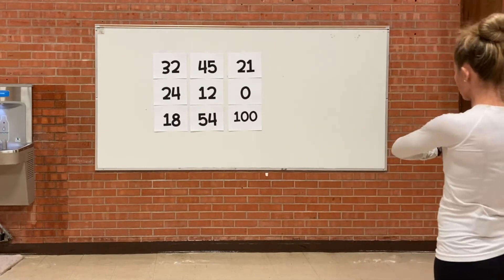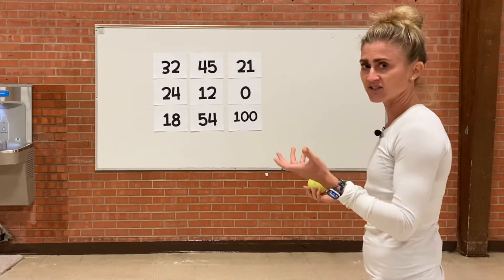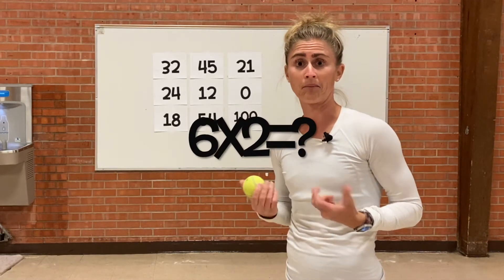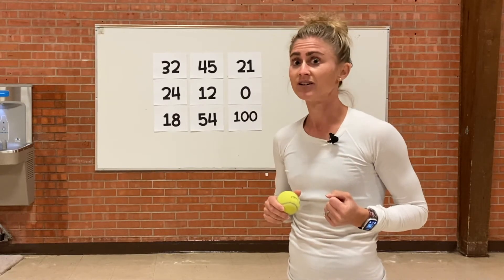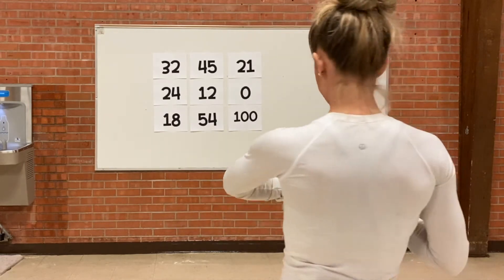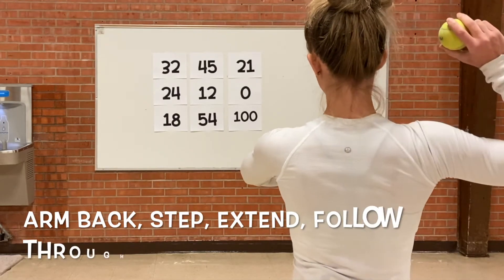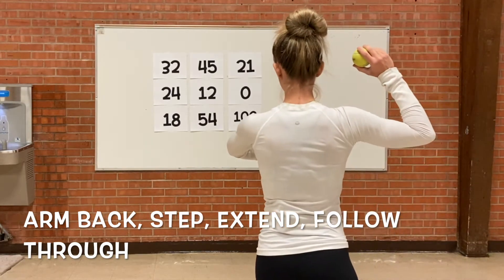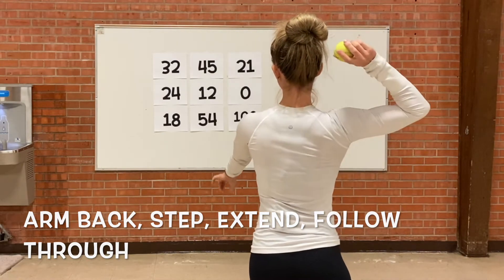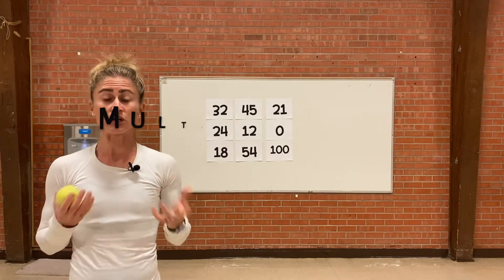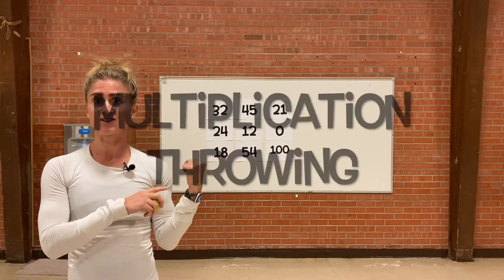Let's say I ask you: what is six times two? Six times two is twelve. So my target is the twelve. I take my arm back behind my ear, I step in opposition with my left foot, I extend my arm, and I follow through at my twelve. That is my target.